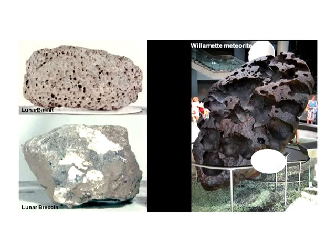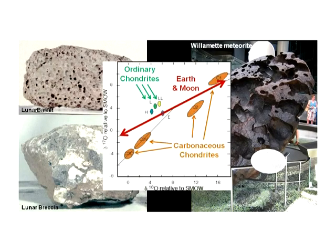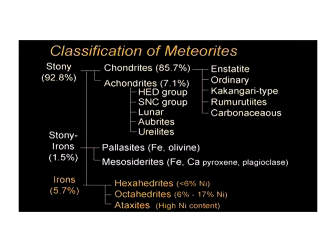Meteorites can easily be distinguished from NASA's moon rocks by their mineralogy, bulk chemical composition, and oxygen isotope ratios. About 85% of all meteorites that fall to Earth are common chondrites, which are composed mostly of silicate materials, olivine and pyroxene.